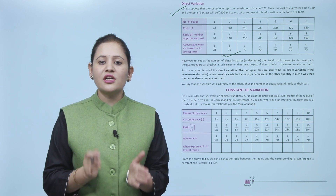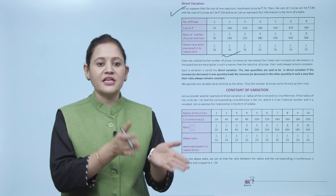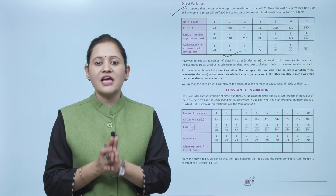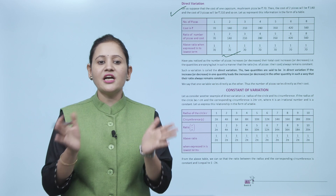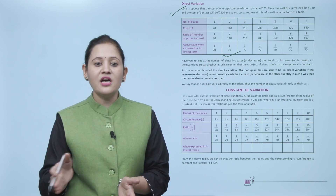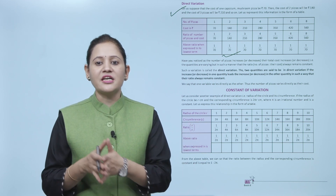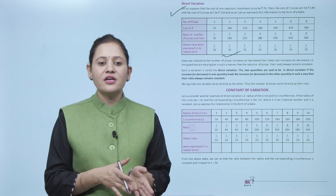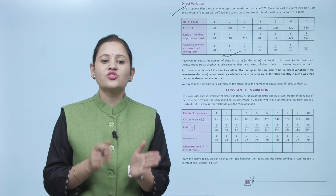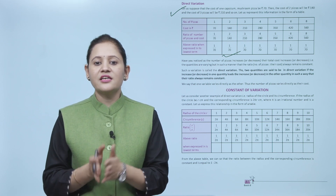Notice that as the number of pizzas increases or decreases, the total cost increases or decreases, but the ratio of pizzas to cost always remains constant. Such a variation is called direct variation. Two quantities are said to be in direct variation if an increase or decrease in one leads to a proportionate increase or decrease in the other, keeping their ratio constant.